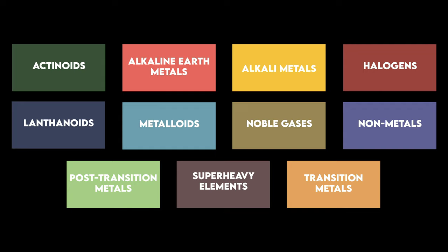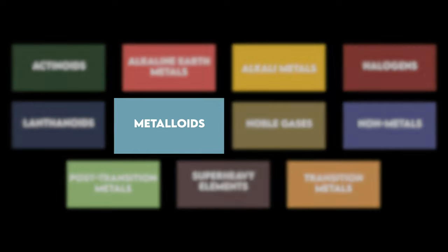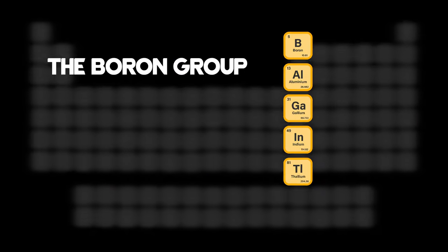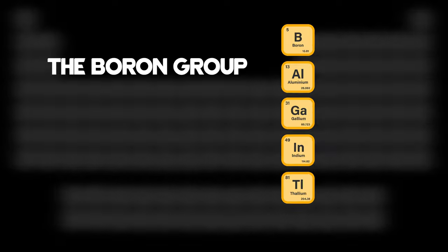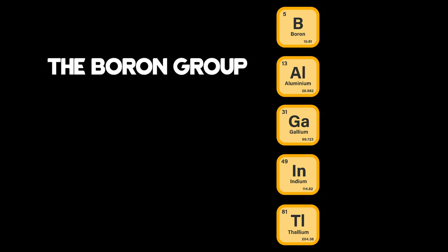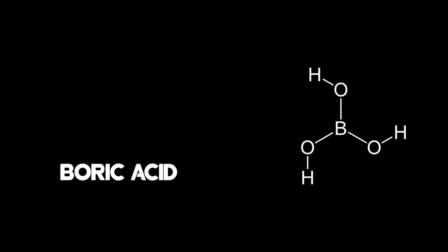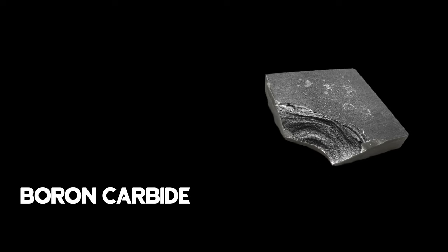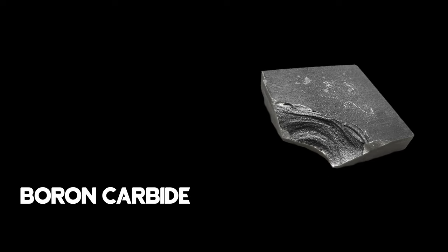It is a member of the metalloid category of elements, which share properties of both metals and nonmetals. As the lightest element of the boron group, it has 3 valence electrons for forming covalent bonds, resulting in many compounds such as boric acid, the mineral borax, and the ultra-hard crystal boron carbide.